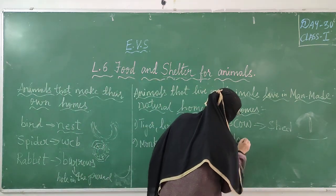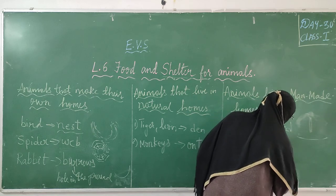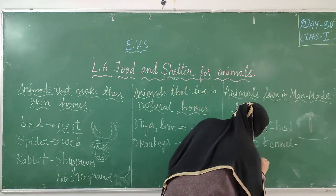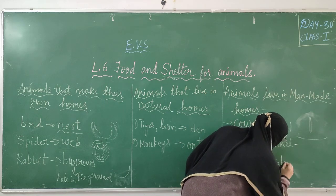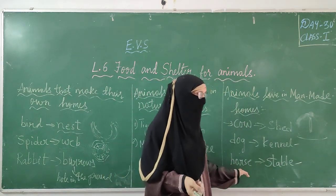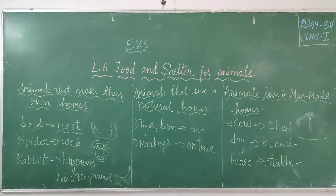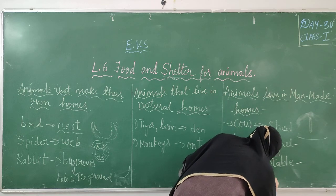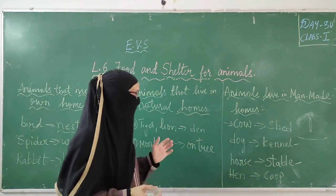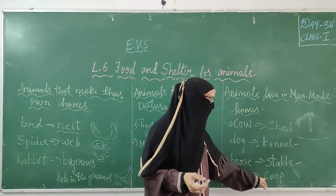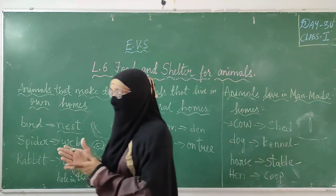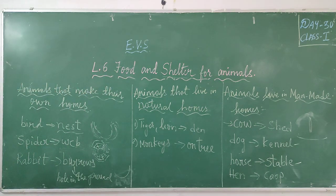Coming to dog — dog lives in a kennel. We make a kennel for the dog. Horse lives in a stable — we make a stable for the horse to live in. Hen lives in a coop — we make a coop, a house for the hen to live in. So cow lives in a shed, dog in a kennel, horse in a stable, and hen in a coop.